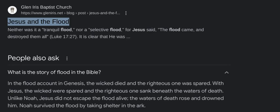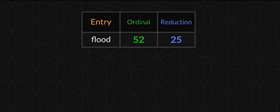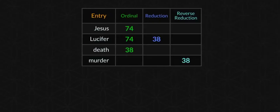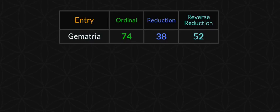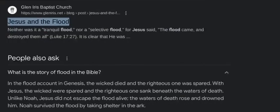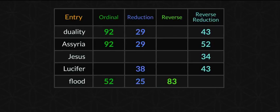Noah survived the flood by taking shelter in the ark. If I'm not mistaken, 'drowned' or 'drowning' equals 38 or 83 — someone check that. So we're talking about a flood — 'flood' gives you the 52, and just for good measure you get the reflection with 25.